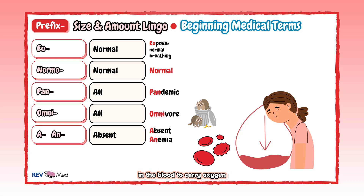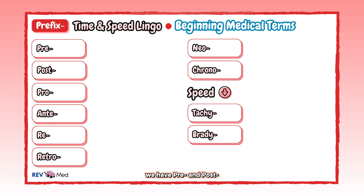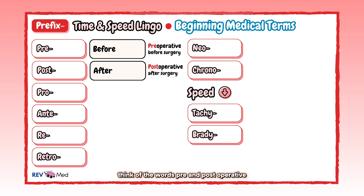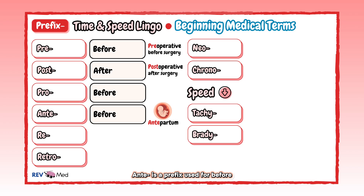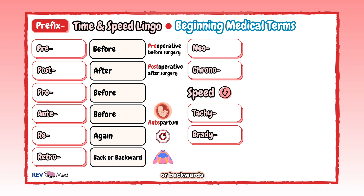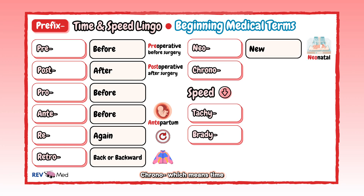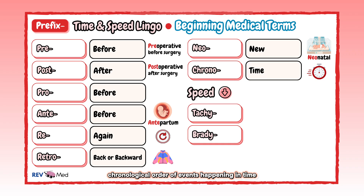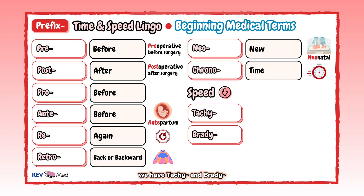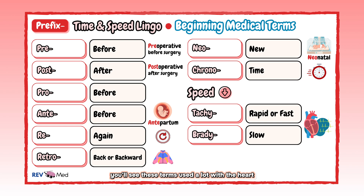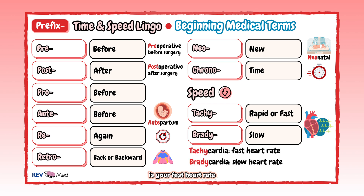For time and speed prefixes: pre and post are opposites meaning before and after — think pre- and post-operative. Ante and pro mean before — antepartum means before childbirth. Re means again — think repeat. Retro means back or backwards — think retro fashion. Neo means new — neonatal refers to a newborn. Chrono means time — think chronological order. Don't confuse chrono with chromo, which means color.